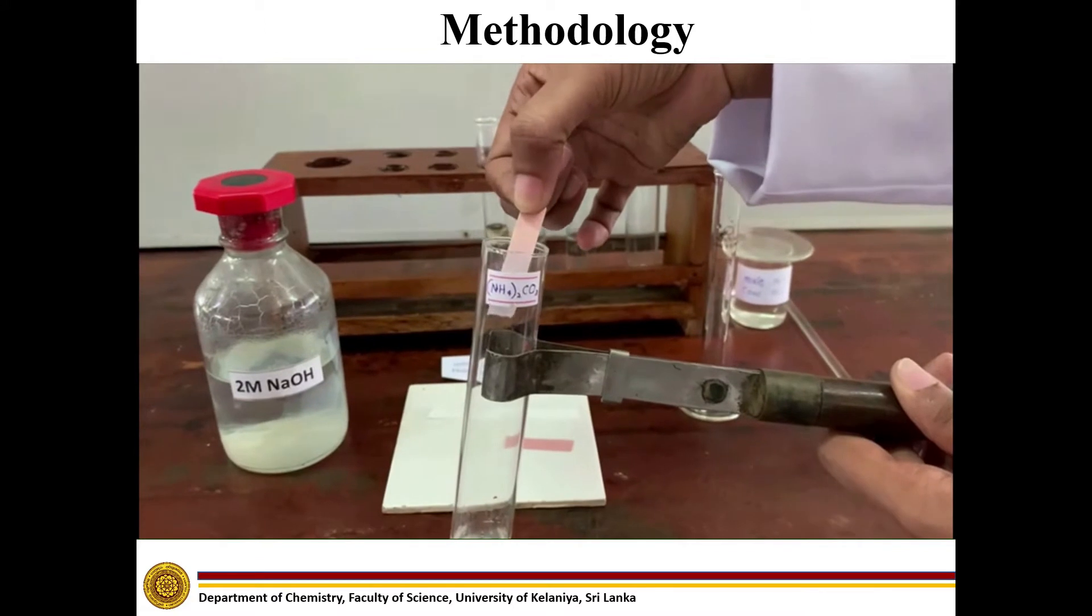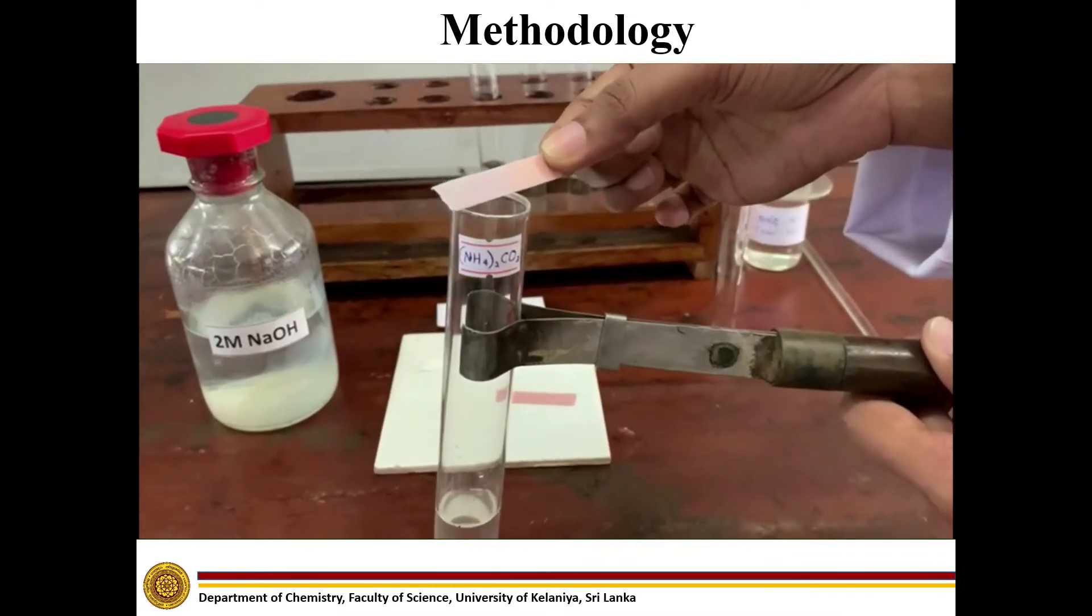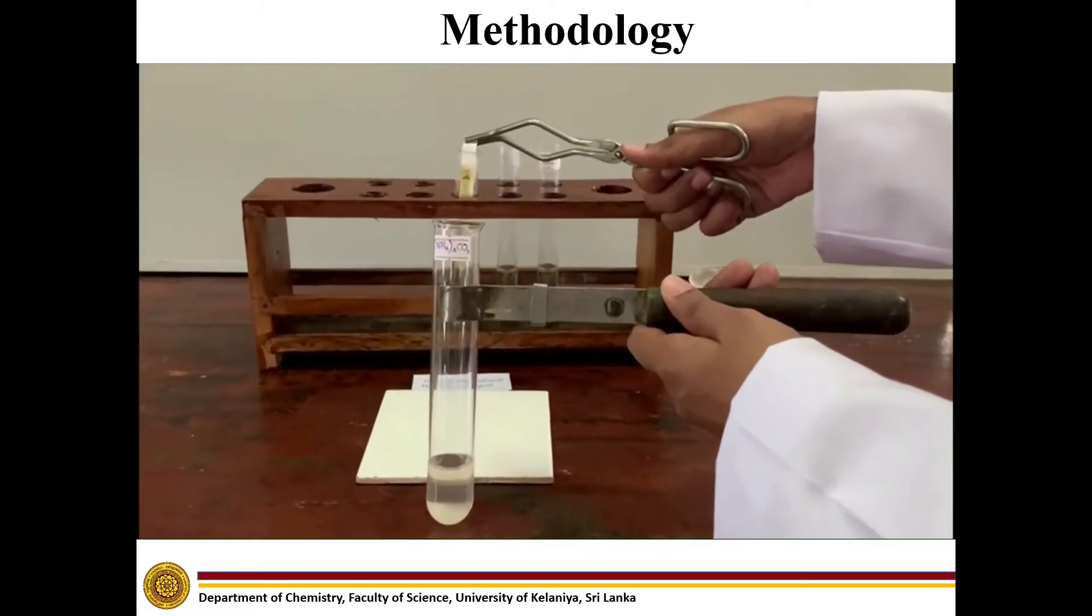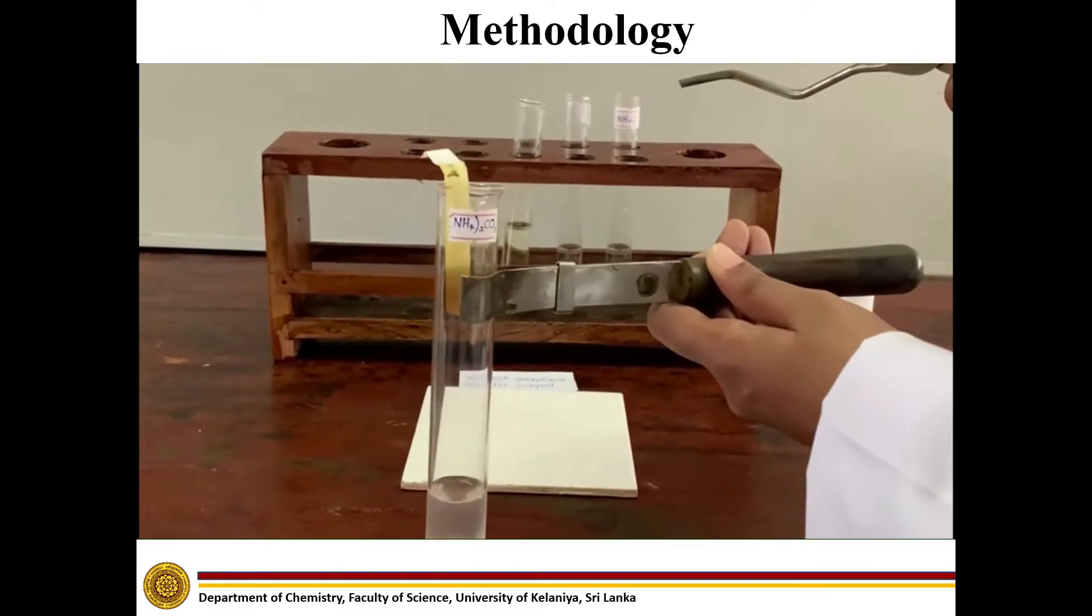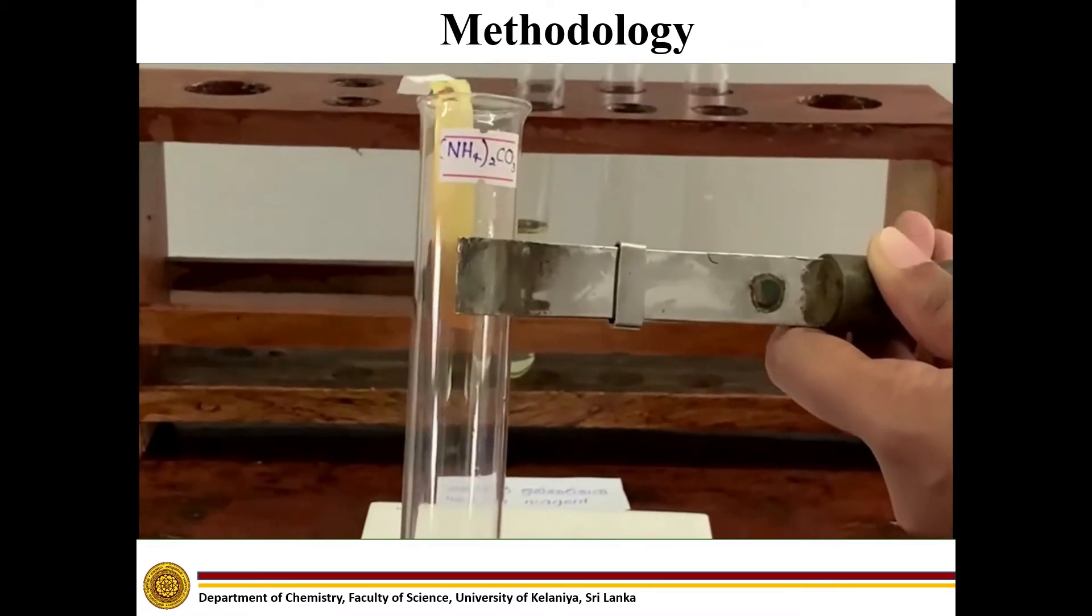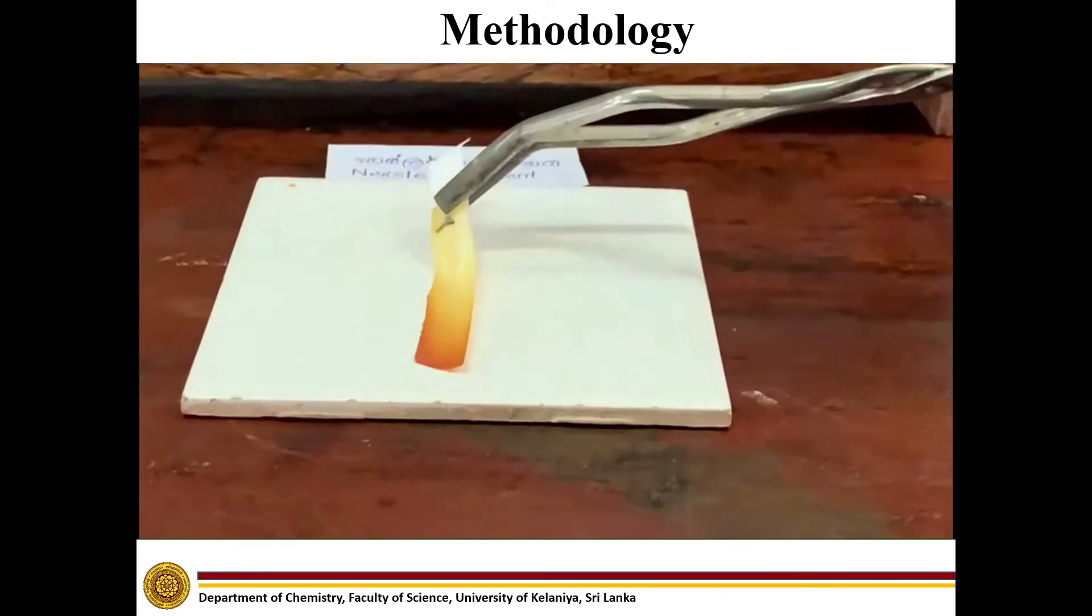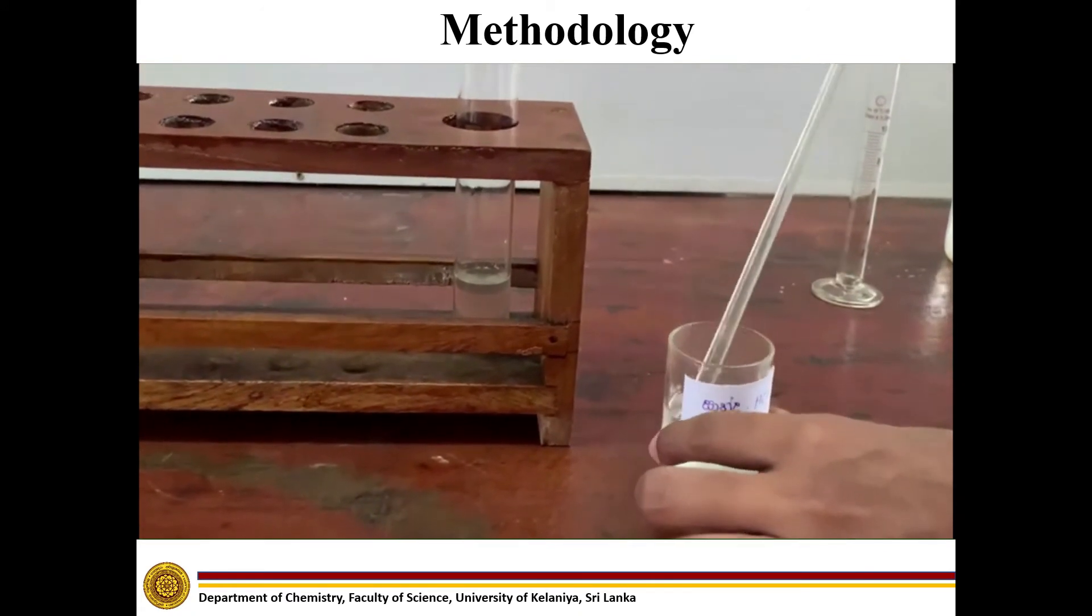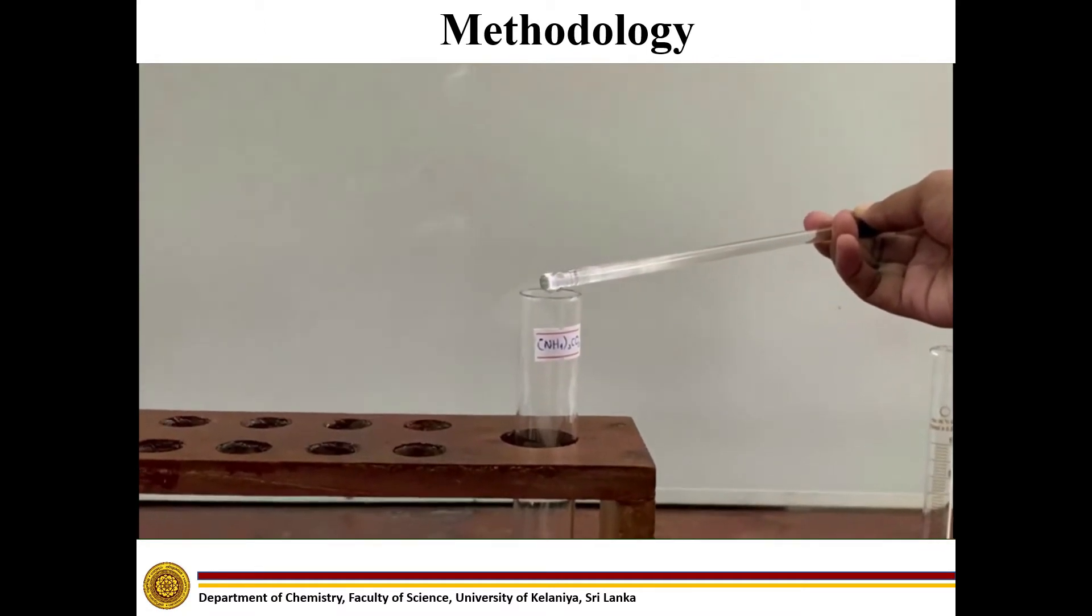Since the evolving gas is ammonia, it turns red litmus into blue. Filter paper dipped in Nessler reagent is turned into brown color. With concentrated HCl, thick white smoke is observed.